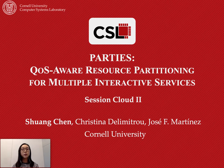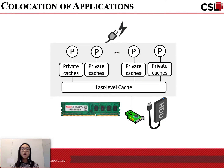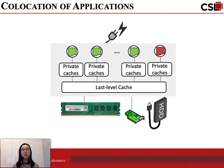I'm Sean Chen from Cornell University, and in session Cloud 2, I'll be presenting Partys, our newly proposed resource manager for co-location of multiple interactive services. Server chip multiprocessors are now packed with an increasing number of cores. Several applications are usually scheduled to the same node to increase server utilization and cost efficiency.